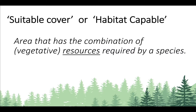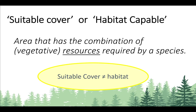Habitat is different from resources, but using those resources we develop suitable cover maps or habitat capability maps. If you're given a habitat map of your region it's likely a suitable cover map for a species — areas that have the combination of vegetative resources required by a species. For amphibians, suitable cover maps might be more focused on climate or moisture conditions. An important point: suitable cover does not exactly translate to habitat because we're ignoring factors such as prey diversity, prey availability, and competition.